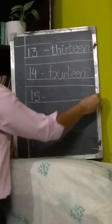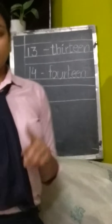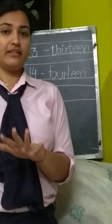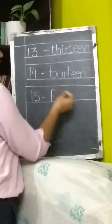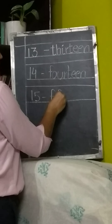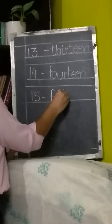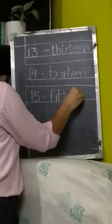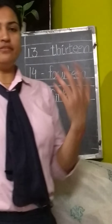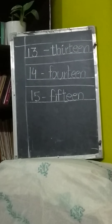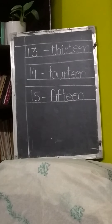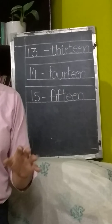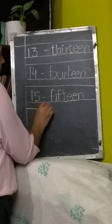And next number is 15. But this is not like 14. We wrote F-O-U-R then T-E-E-N, but this time we don't write 5 then T-E-E-N — that would be 'fiveteen,' which is wrong. The correct word is 'fifteen.' So its spelling is F-I-F-T-E-E-N. 'Fifth' plus 'teen.' Is it clear? Have you written 15?